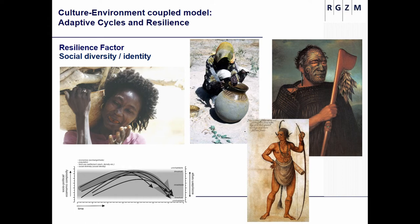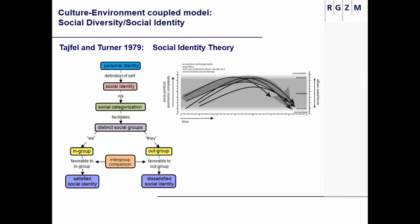Apart from body decoration — which reflects personal identity to some extent but is rarely preserved — we do occasionally have good evidence from pottery decoration. Pottery decoration might reflect certain levels of identity on a personal level and on a more group-oriented level, at least in some periods. So we elect to look at pottery time series in order to see whether we can use them for understanding fluctuations in social diversity or social identity.